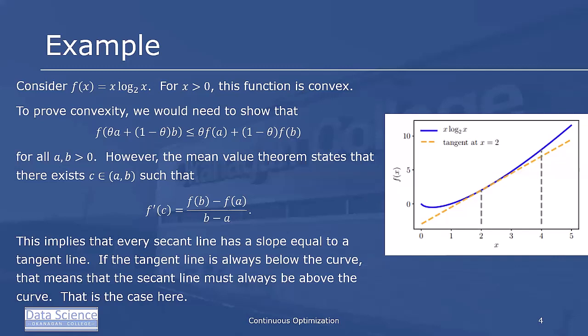If that tangent line is always below the curve, which it is in this case, that means that the secant line must always be above the curve, and that's the case here.